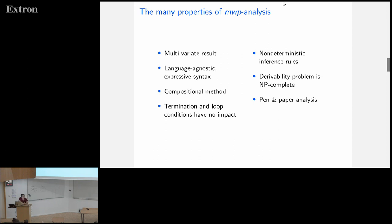There are different properties of this analysis. It produces a multivariate result — fine-grained information about complexity. It's language agnostic in the sense that any imperative language can be analyzed. It's an expressive syntax compared to a tape of zeros and ones, a more natural way of doing complexity analysis. It's also compositional, and you don't have to worry about termination. For a loop, it doesn't matter how many times it iterates — we can get past those tricky problems using this system.